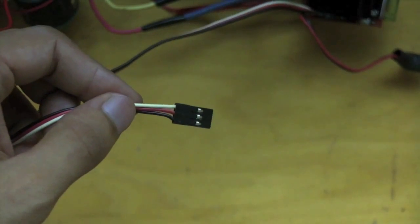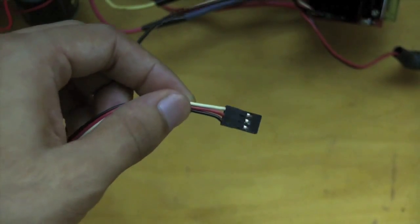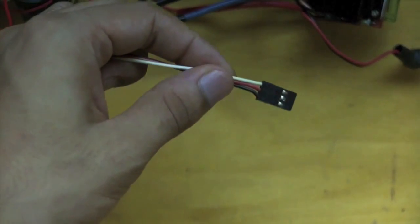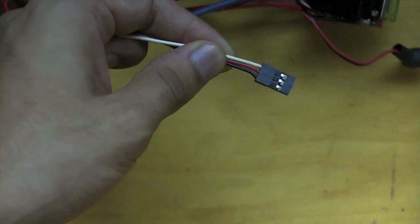To hook up your ESC to your Arduino, you just plug it in like a standard servo. The white or yellow cable wire is always the signal, red is power, and black or sometimes brown or green is ground.